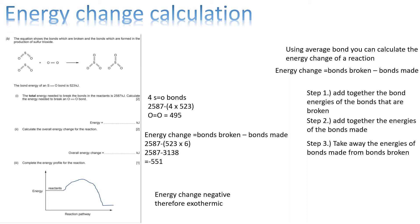So, if we do 2,587 minus 4 times 523, because there are 4 sulphur-to-oxygen bonds, that'll give us 495 kilojoules, which is the energy of an oxygen-to-oxygen bond.